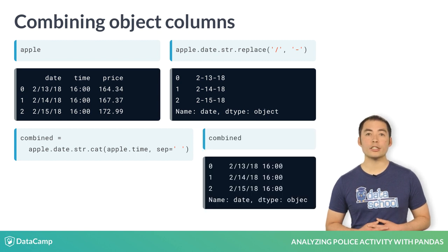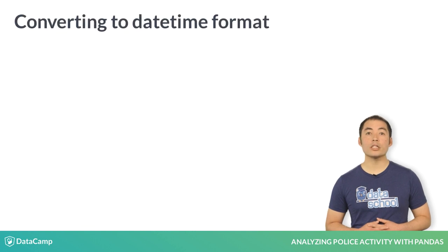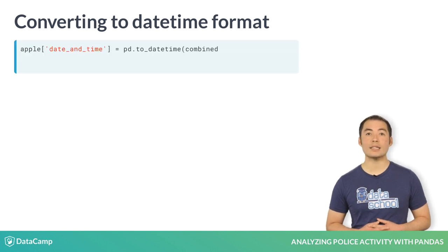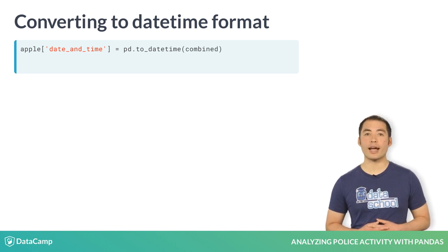You can see that the combined series contains both the date and time. It's still an object column, but it's now ready for conversion to date-time format. To convert the combined series to date-time format, you simply pass it to the to_datetime function and store the result in a new column. We didn't even need to specify that the original data was in month-day-year format — pandas just figured it out.